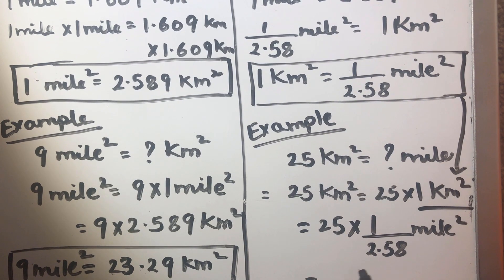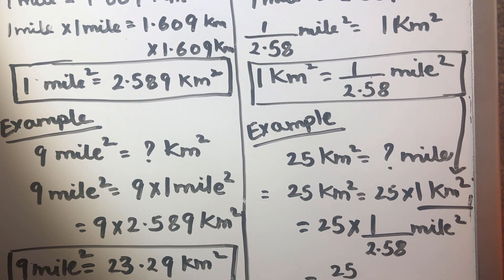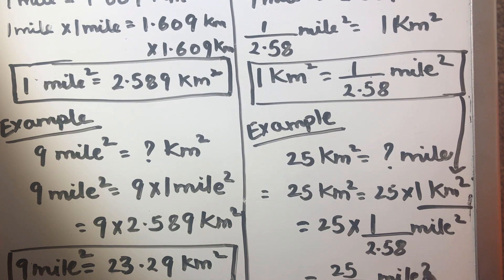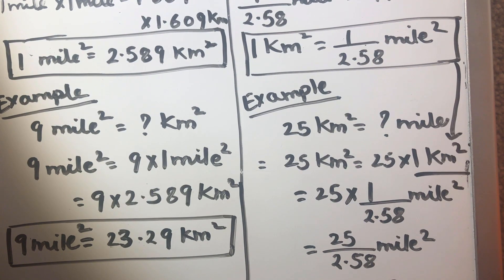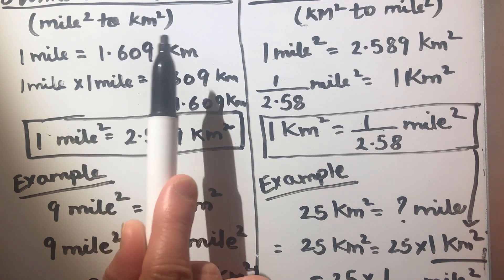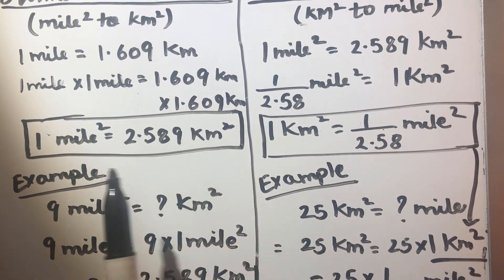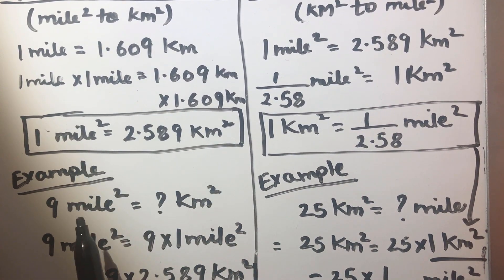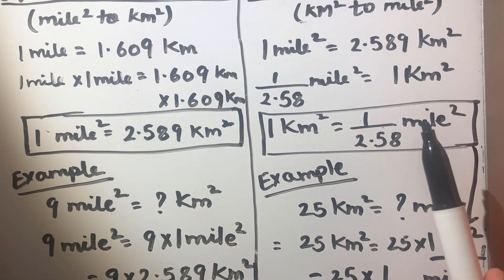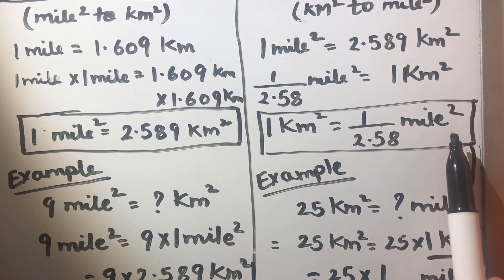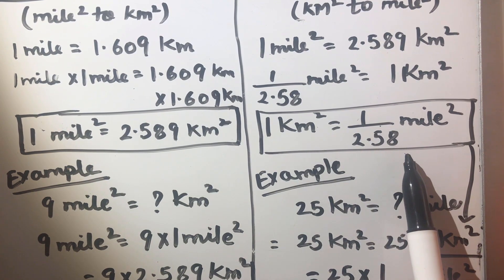So this will be 25 over 2.58 square miles, which gives us 9.65 square miles. To convert from square miles to square kilometers, multiply by 2.58, and to convert from square kilometers to square miles, divide by 2.58.